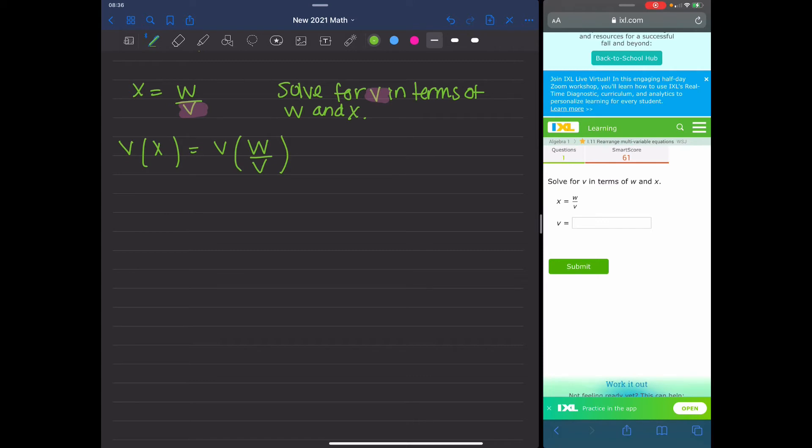So when I do that, I'm going to get VX equals—because they are crossing each other on the same side—I'm going to get W over V. And those Vs are going to cancel out. So on the right, I'm left with VX equals W. So the operation right here of V and X is multiplication. So I want to divide X from both sides. So VX divided by X equals W divided by X. And then again, these cancel out. So V equals W over X. And that's my solution.